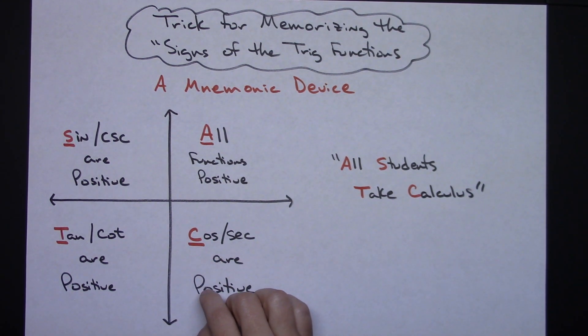And then in the last one, the C for calculus stands for cosine. And to me, what goes with it? Secant. Cosine and secant. Those are the only two that are positive in the fourth quadrant. All other trig values are negative.